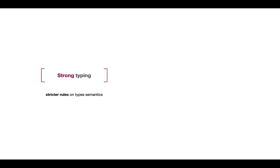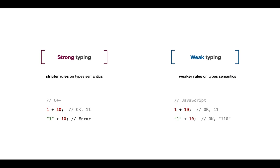When talking about types we also talk about strong typing and weak typing. There is no common agreement on exactly what these mean, but usually they refer to stricter or weaker rules on type semantics — typically related to implicit type conversion at runtime. For example, in JavaScript it's completely normal to add string '1' plus number 10 and get a string result, which would be an error in C++. When implementing a type checker we usually want stricter rules, though sometimes enforcing stricter rules reduces code convenience and requires more type annotations.